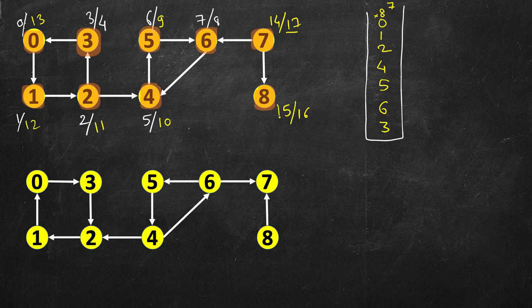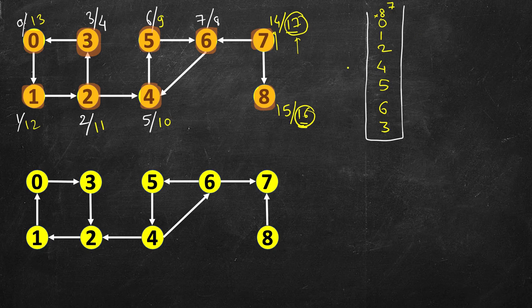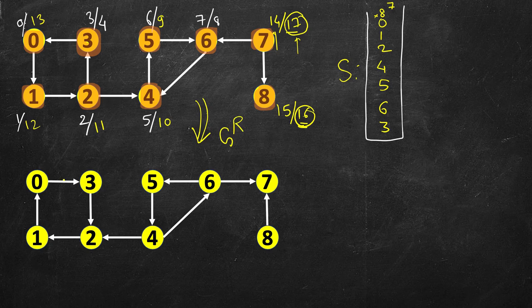Vertex 8 has a finish time of 16, and vertex 0 is the next one — you can verify that this stack correctly captures the ordering when you pop vertices. Now this is the reversed graph Gr — you can verify all edges have been reversed: for example, 3 to 0 becomes 0 to 3, and 1 to 0 is reversed. Now we will do DFS from the top of the stack, picking vertex 7 first.